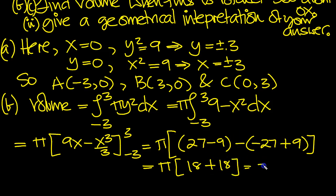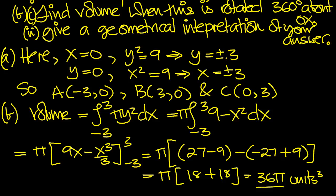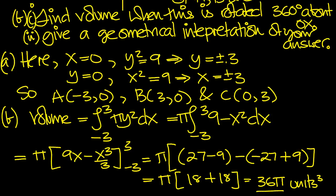So it equals 36π units cubed, and that's the volume. So that's the volume when it's rotated 360, or 4 lots of 90 degrees, around the x-axis.